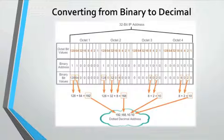In this example, we can see that every byte of the octet has a different value. These values are seen across each octet, and every octet will form what is called the address.